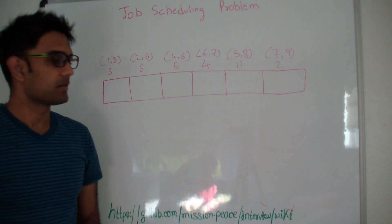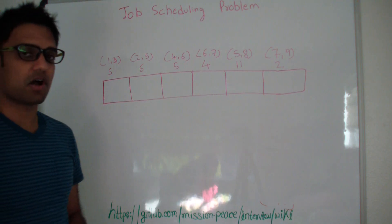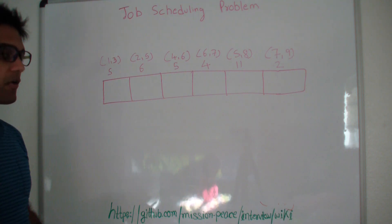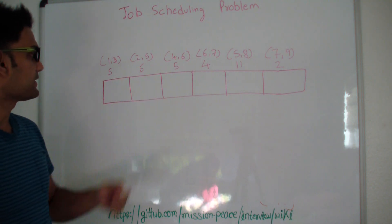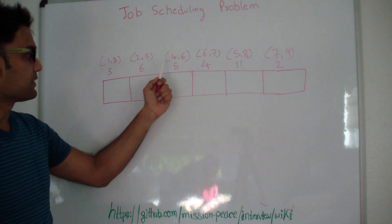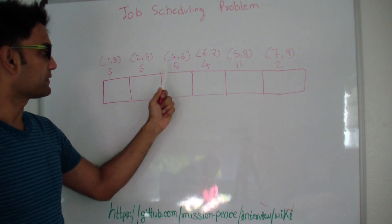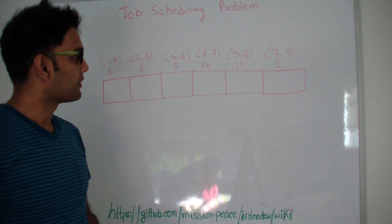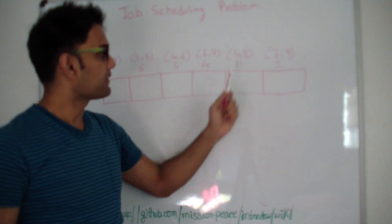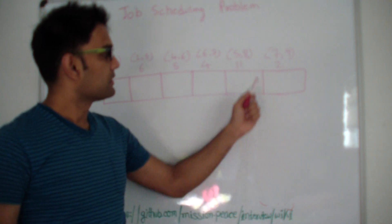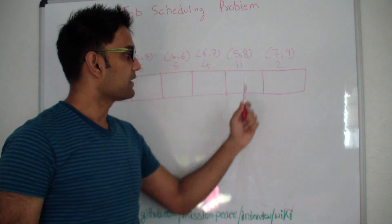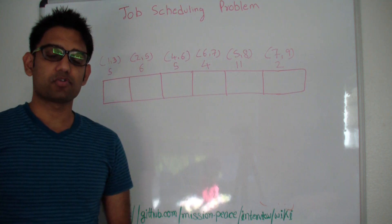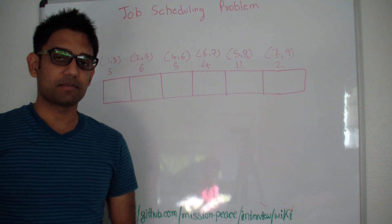Let's look at this example. We have six jobs. Job 1 starts at 1 and ends at 3, and you make 5 profit. Job 2 starts at 2 and ends at 5, you make 6. Similarly for job 3: starts at 4, ends at 6, and you make 5. Job 4 starts at 6, ends at 7, and you make 4. Job 5 starts at 5, ends at 8, and you make 11. Job 6 starts at 7, ends at 9, and you make 2. You have to select jobs so they don't overlap and you maximize profit.